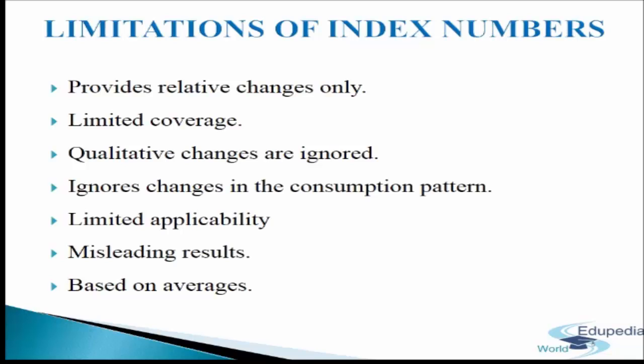Second limitation: Limited coverage. Index numbers are usually based on sample items. It is not practically possible to include all commodities. If the selected items do not represent the entire universe, index numbers will not be true. Third limitation: Qualitative changes are ignored. If the increase in price of a commodity is due to improvement in quality of the product, it is not taken into account and is not reflected in the index numbers. Fourth limitation: Ignores changes in the consumption pattern. With passage of time, habits, tastes, preferences, and trends undergo changes. Index numbers constructed in previous years will be of limited use, and modifying them based on the old consumption pattern is almost impossible.